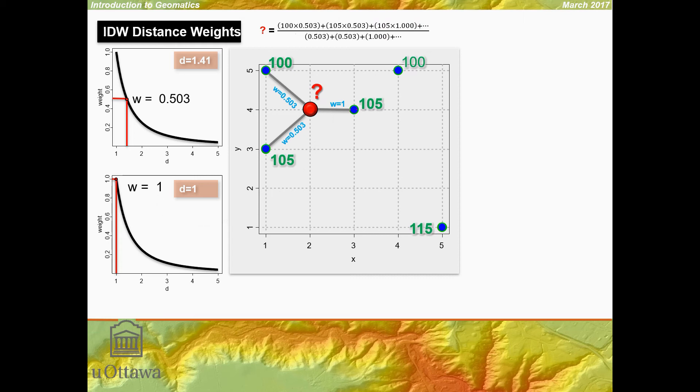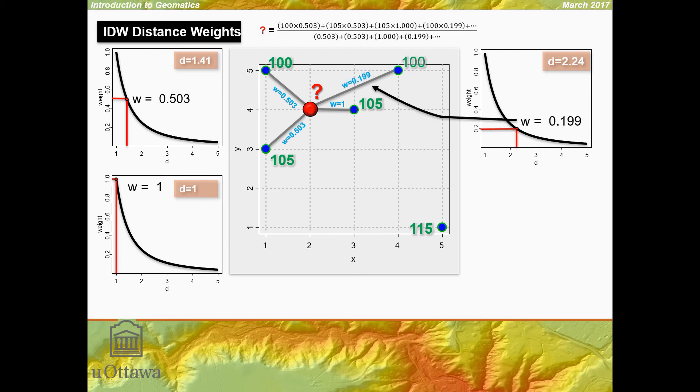The next one is 2.24 units away. The value 100 is 2.24 units away. We look at our graph and find where 2.24 is, and it equates to a weight of 0.199. So we have now 100 times the weight 0.199, and we also add 0.199 to our denominator.